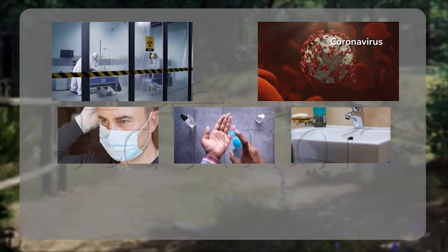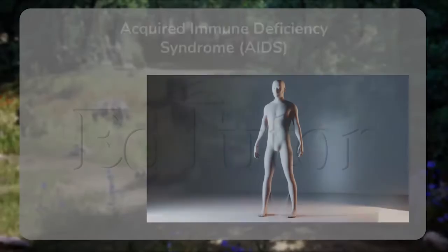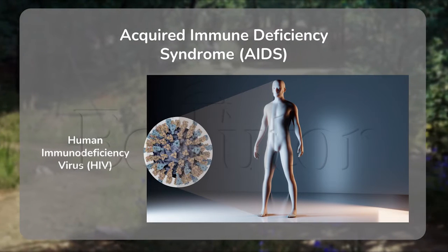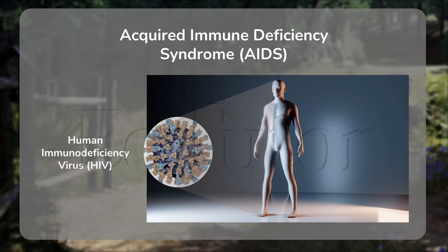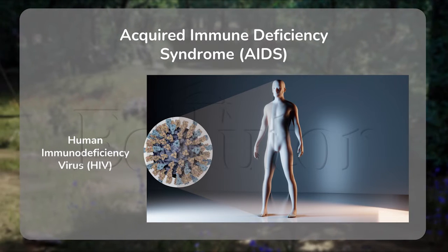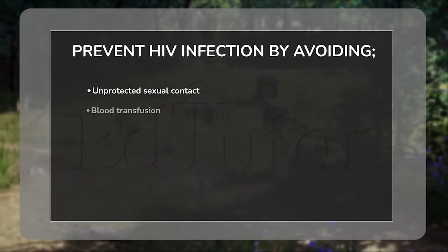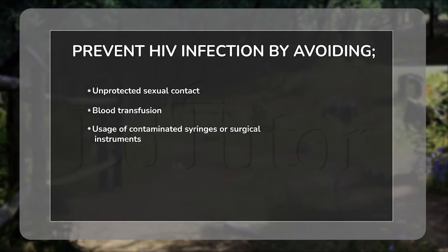Let's take another example: the notorious disease Acquired Immune Deficiency Syndrome, caused by HIV or the Human Immunodeficiency Virus. Unfortunately, this disease is not yet curable, but it can be prevented by avoiding its modes of transmission, which include unprotected sexual contact, blood transfusion, and usage of contaminated syringes or surgical instruments.